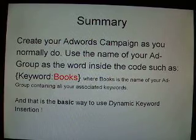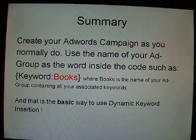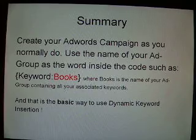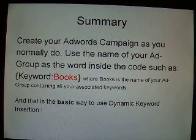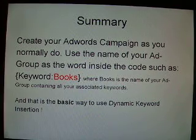So in summary: you create your AdWords campaign as you normally do. Use the name of your ad group as the word inside the code — such as 'keyword colon books' where 'books' is the name of your ad group containing all your associated keywords. And that's the basic way to use dynamic keyword insertion. I'll do another video later showing how we take that further.